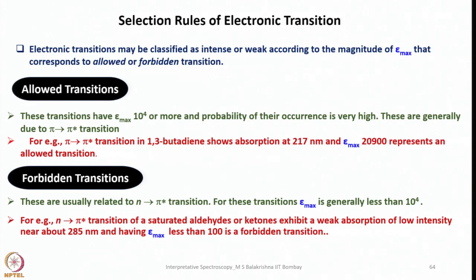Now we come back to the selection rules of electronic transitions. When writing microstates, we saw several possible excited states, and if electrons were promoted to each state from the ground state, electronic spectra would be very complicated. However, all these transitions are governed by selection rules. Electronic transitions may be classified as intense or weak according to the magnitude of ε_max, corresponding to allowed or forbidden transitions. Allowed transitions have ε_max of 10⁴ or more and high probability — generally due to π→π* transitions. For example, the π→π* transition in 1,3-butadiene shows absorption at 217 nm with ε = 2900.